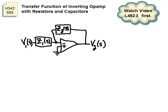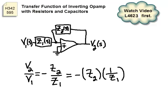Z1 is some combination of resistors and capacitors. Z2 is some combination of resistors and capacitors. The transfer function, V2 over V1, is negative Z2 over Z1, or negative Z2 multiplied by 1 over Z1.